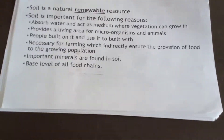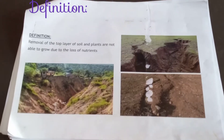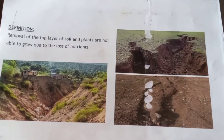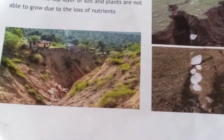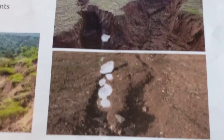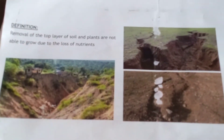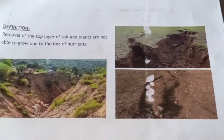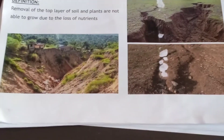Now we are looking at soil erosion. What is soil erosion? Soil erosion is the removal of the top layer of the soil, and this removal can be through agents of wind or rainfall. When the top layer of the soil is removed, the soil will become less fertile, no longer having the nutrients that it previously had.